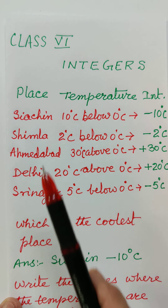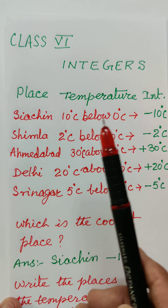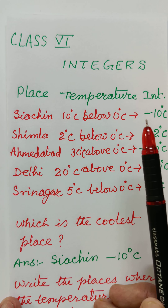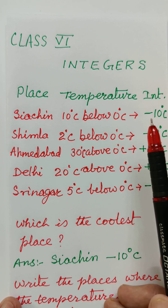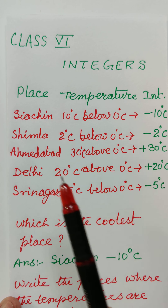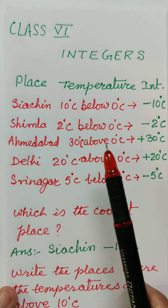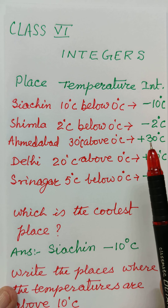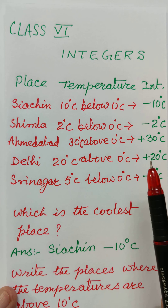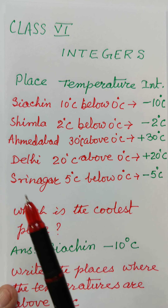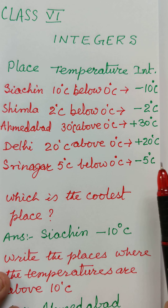Class 6 integers. Here are the places and their temperatures. For below 0 degree centigrade, we write minus, so we will write minus 10 degree centigrade. Similarly, for 2 degree centigrade above, we write plus, so plus 30 degree centigrade. Similarly, 20 degree above will be written as plus 20 degree, and 5 degree below will be written as minus 5 degree centigrade.